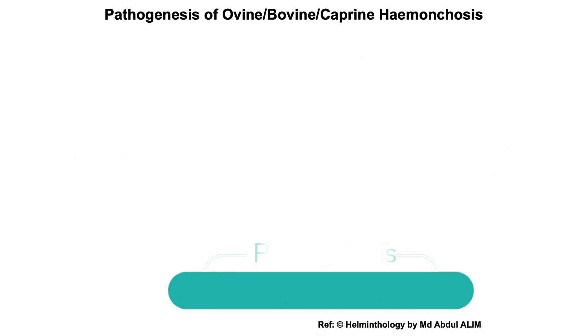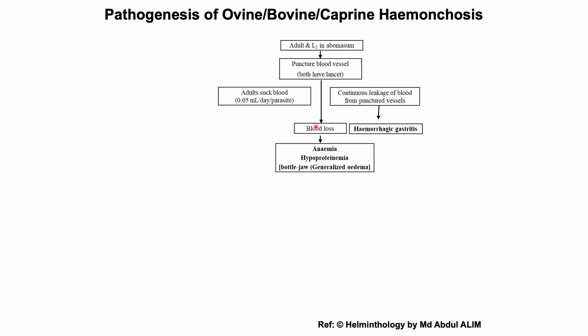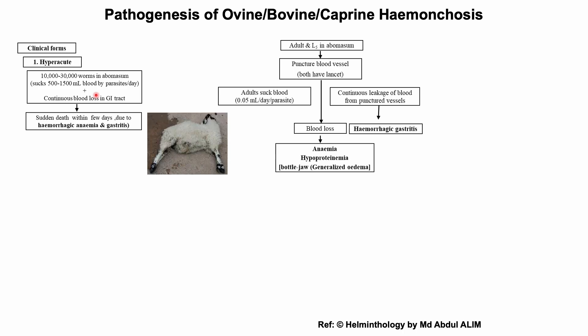Pathogenesis of hemonchosis. The adult parasites are located in the abomasum and with the help of the lancet, they puncture blood vessels, resulting in leakage of blood into the abomasum. Blood loss is further contributed as the worms are hematophagous; an adult parasite sucks 0.05 ml of blood per day. In hyperacute cases, there may be 10,000 to 30,000 parasites taking up 0.5 to 1.5 liters of blood per day along with continuous leakage of blood in the gastrointestinal tract. As a result, affected animals die suddenly due to hemorrhagic anemia and gastritis.